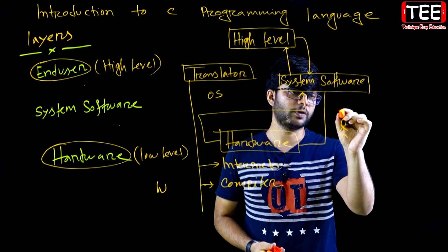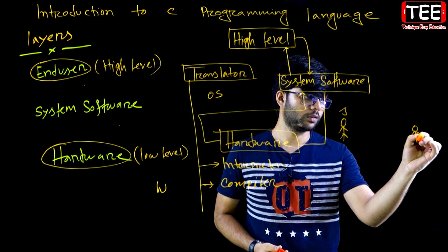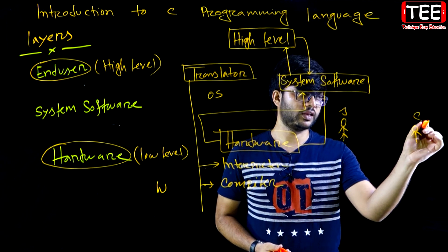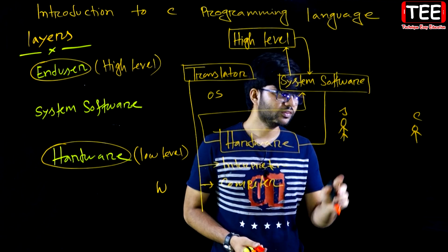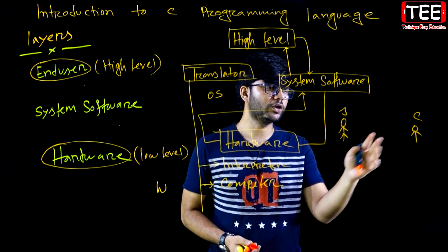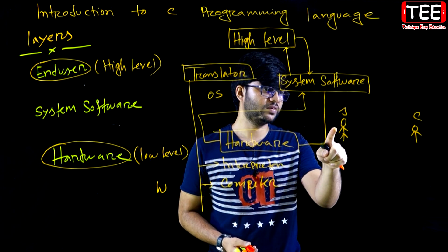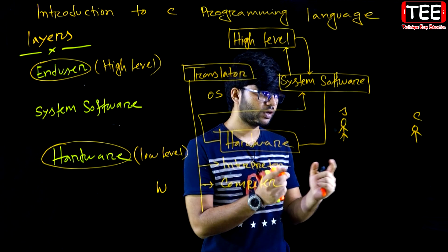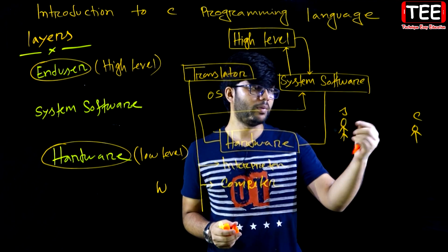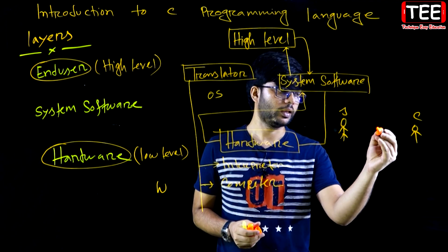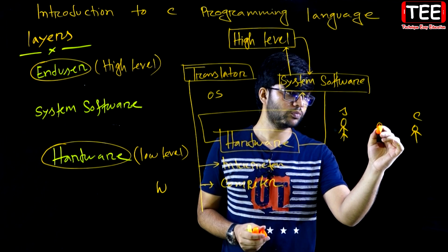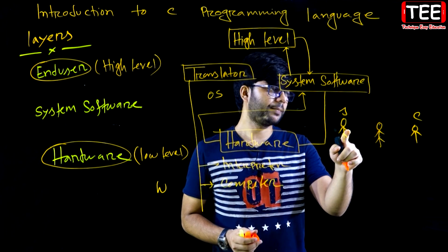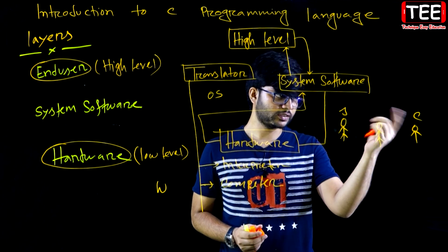For example, like Japanese people and Chinese people — Chinese people and Japanese people cannot directly understand each other, so a translator is needed between them.